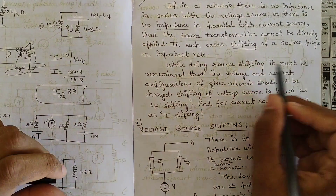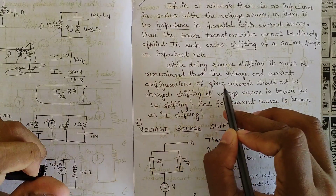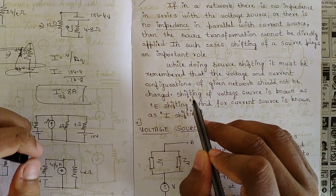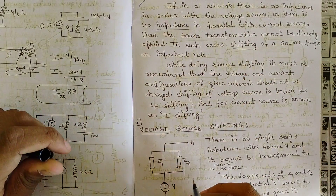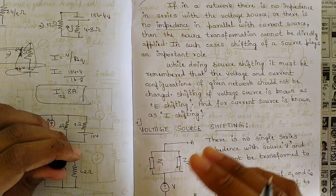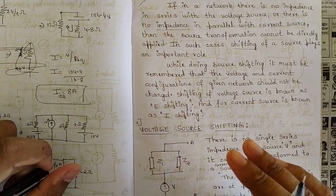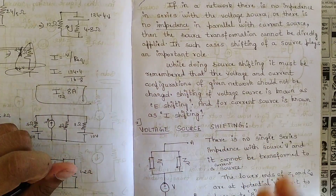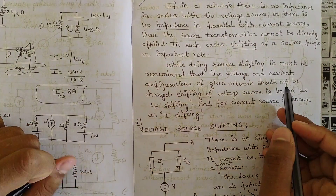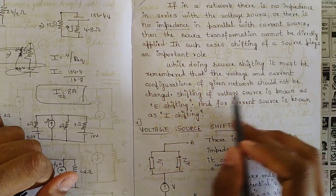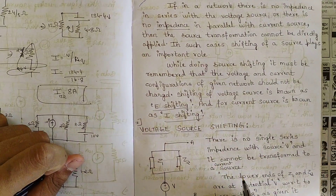While doing source shifting, it must be remembered that the voltage and current configurations of a given network should not be changed. Whatever the voltage and current sources are given in a particular question, after shifting, those values cannot be changed — they should remain as they are. Shifting of a voltage source is known as E-shifting, and for a current source it is known as I-shifting.